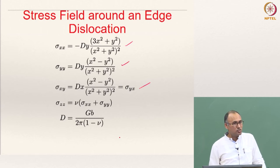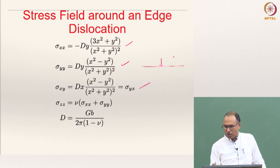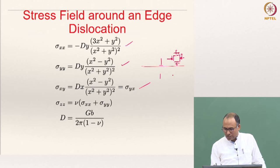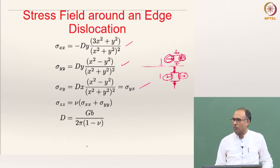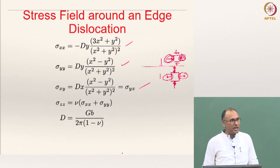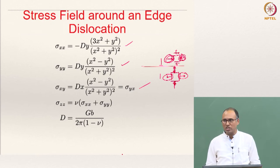For an edge dislocation, the stress state you would observe shows compression above and tension below the slip plane, with some shear as well. So an edge dislocation can cause both normal and shear stresses, whereas a screw dislocation will only cause shear stresses.